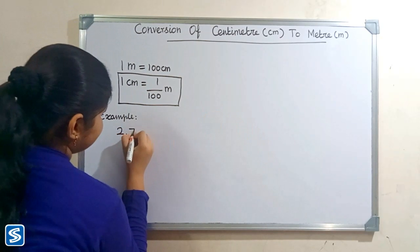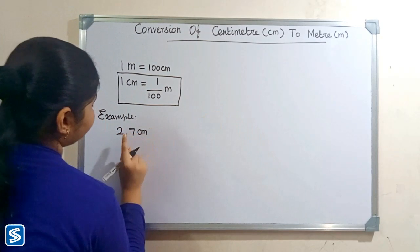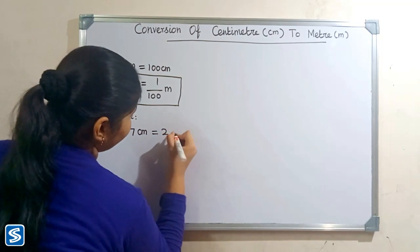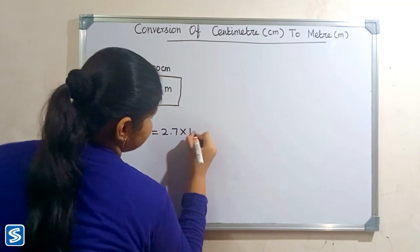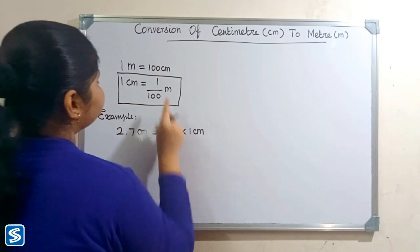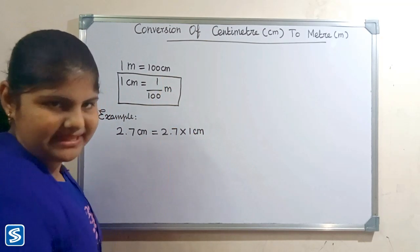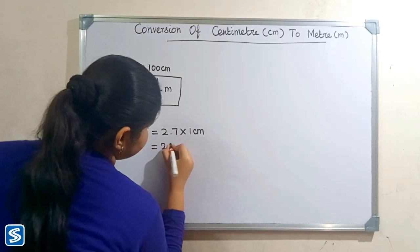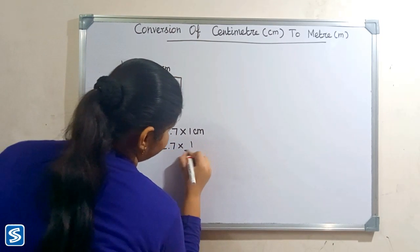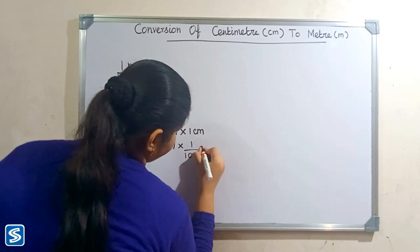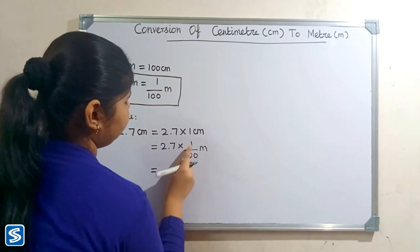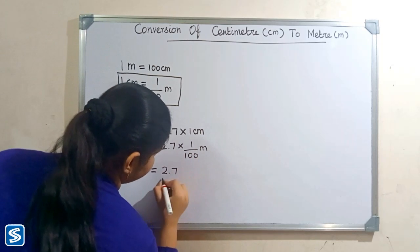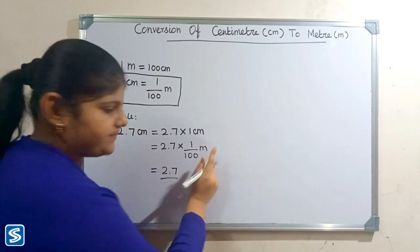Next we will take another example: two point seven centimeters. Two point seven centimeters can be written as two point seven multiplied by one centimeter. We substitute one by hundred meters in the place of one centimeter, so two point seven multiplied by one by hundred meters. Two point seven multiplied by one will be two point seven, so two point seven divided by hundred meters.